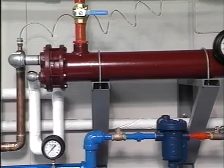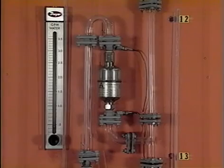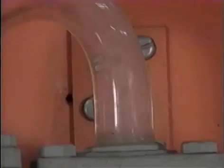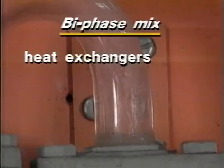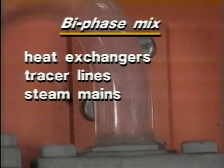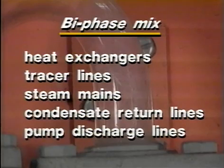Water hammer can occur in any water supply line, hot or cold, and its effects can be even more pronounced in bi-phase systems. Bi-phase systems contain both condensate and live or flash steam in the same space. Heat exchangers, tracer lines, steam mains, condensate return lines, and in some cases pump discharge lines may contain a bi-phase mix.